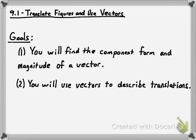Hey, how's it going, guys? We're going to continue translating figures in this video — the second one for section 9.1 — but what we're going to focus on here is what are called vectors. I mentioned those in the first video. Now you're going to learn what they are and be able to do a few things with them, as you see in the goals stated here. One goal is that you will find the component form and the magnitude of a vector, and another is that you will use vectors to describe and perform translations.